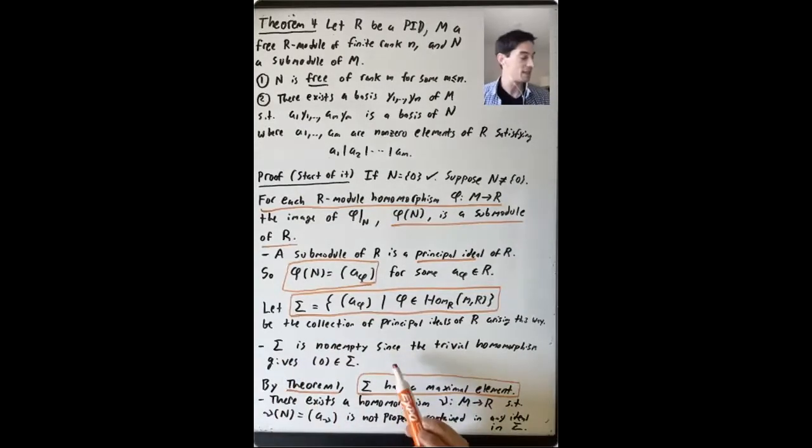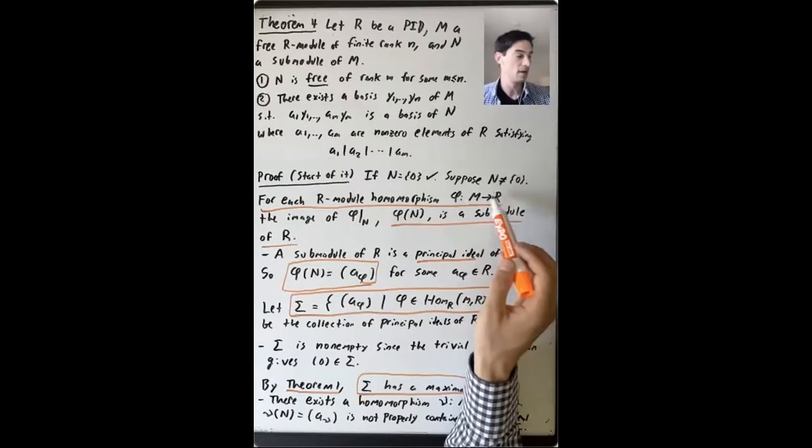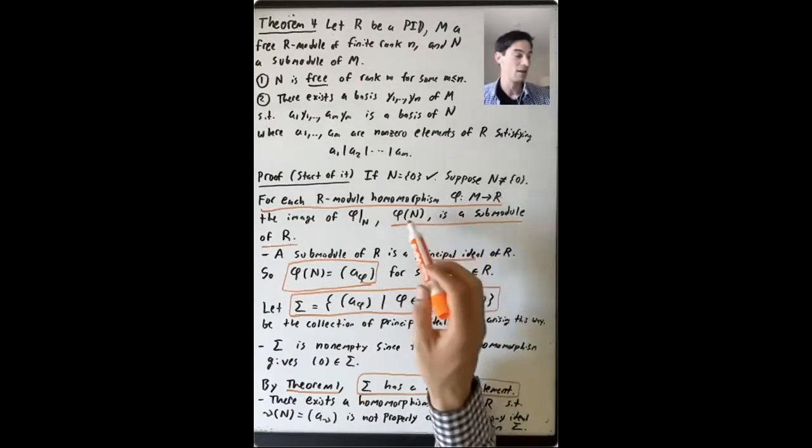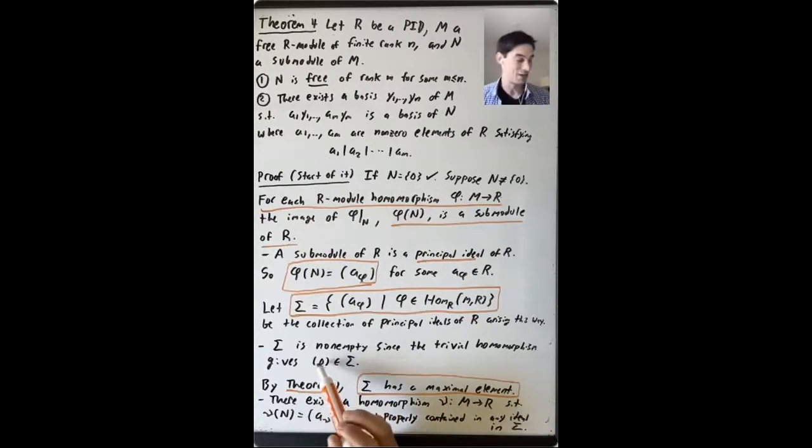Sigma is not empty, because for one thing, we could always take the trivial homomorphism, which sends everything to zero. So the image of N is zero in R, and that's a principal ideal. It's generated by the element zero. So the trivial submodule, the ideal generated by zero, is certainly in sigma. So it's not zero.